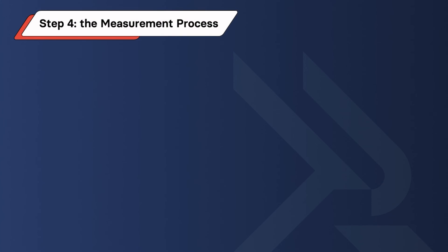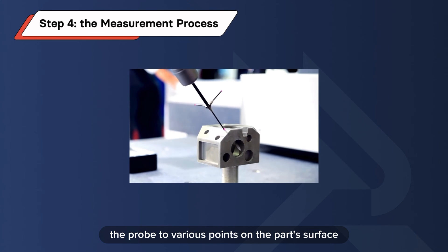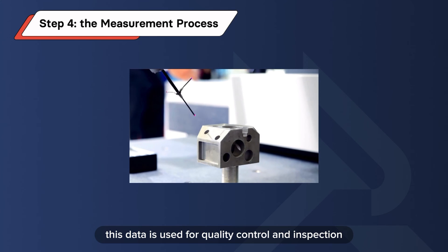Step 4 is the measurement process. With the machine calibrated and the part aligned, the CMM moves the probe to various points on the part's surface. It then records the coordinates and dimensions. This data is used for quality control and inspection.